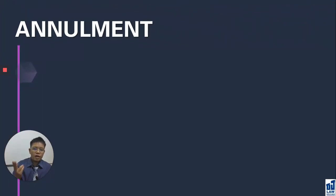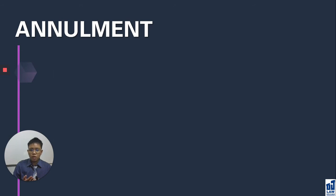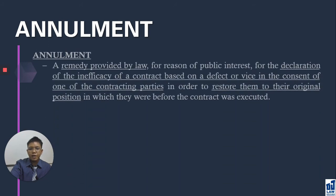Regarding annulment: remember that annulment and ratification are the two options. If you choose annulment, note that you only annul voidable contracts — you cannot annul rescisible contracts. In the same way, you cannot rescind voidable contracts. Be careful of the terminologies you use: annulment is used only with respect to voidable contracts; rescission is used only with respect to rescisible contracts. Annulment is a remedy for the declaration of the inefficacy of a contract due to a defect or vice in the consent of one of the contracting parties.